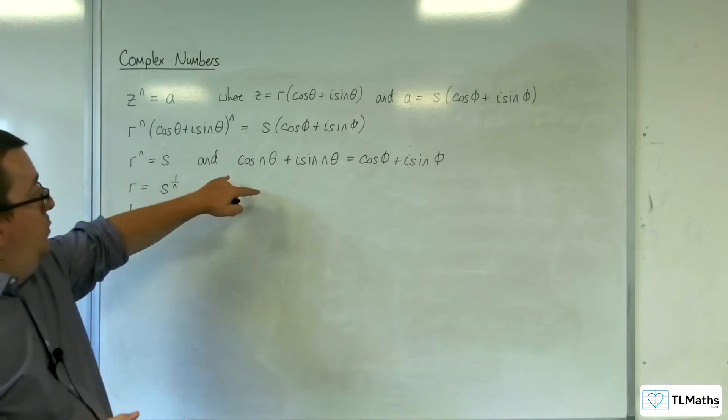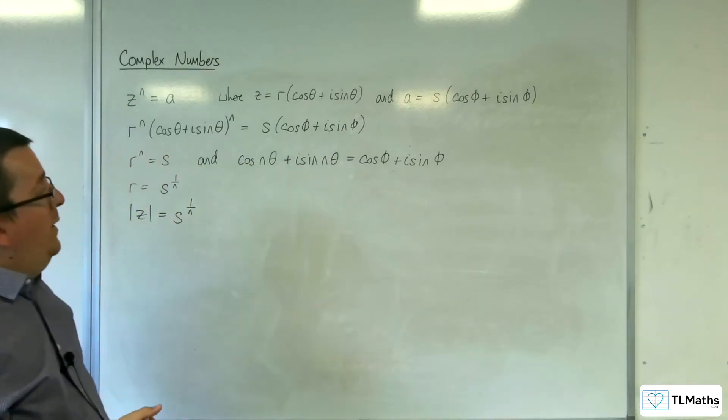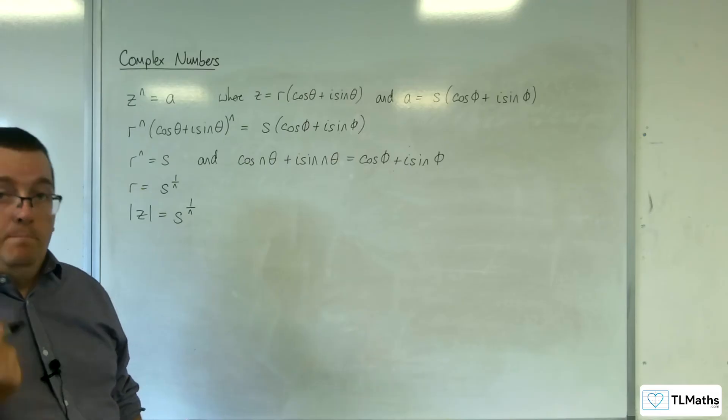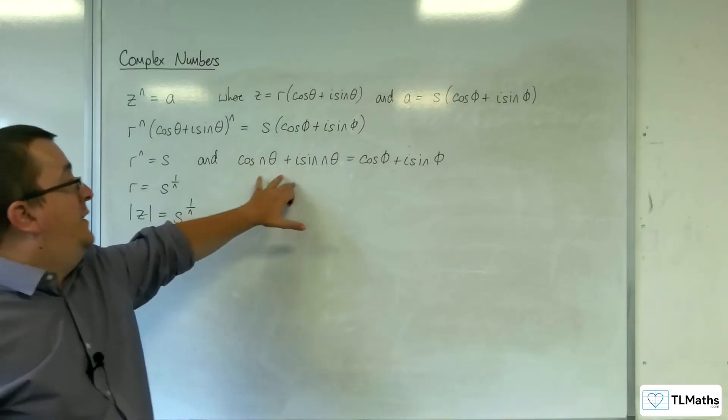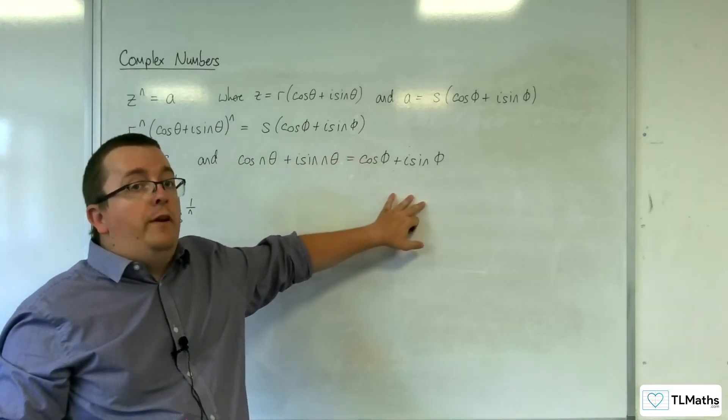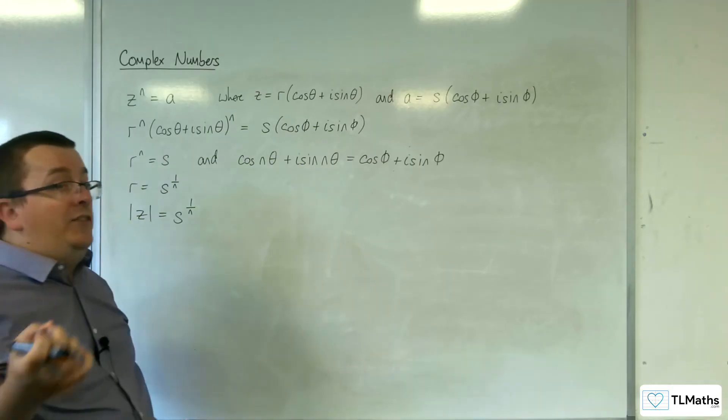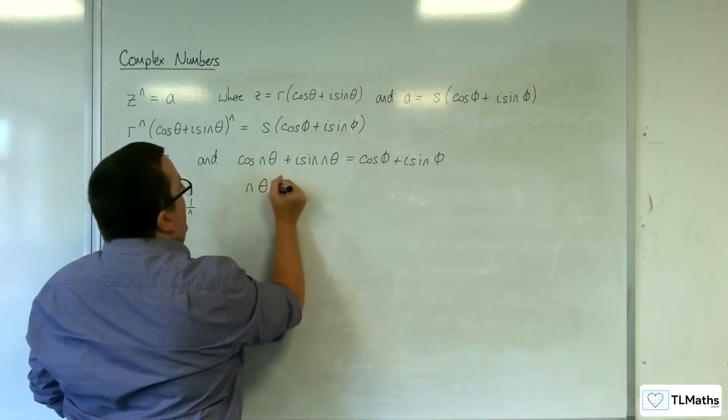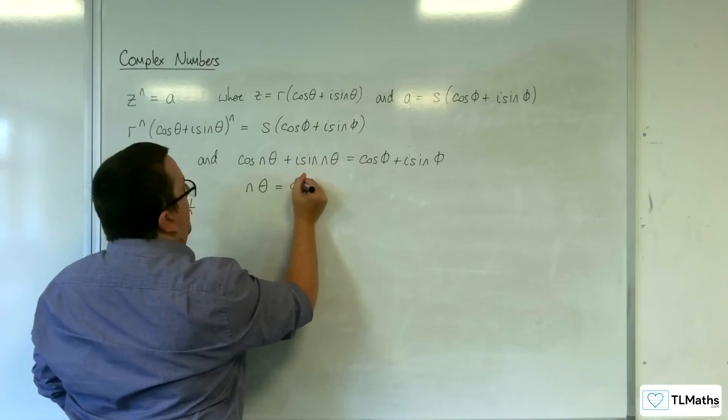Now with this, we can then say that the arguments must be the same. The argument of the left-hand side must be equal to the argument of the right-hand side. Now if that is the case, then we can't just say that n theta must be equal to phi.